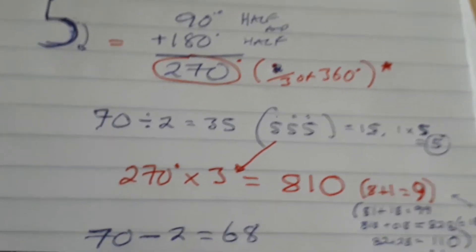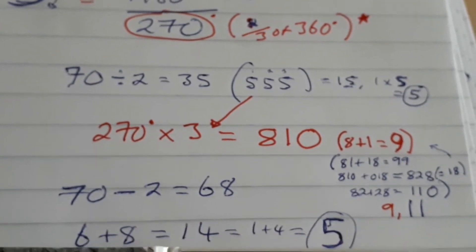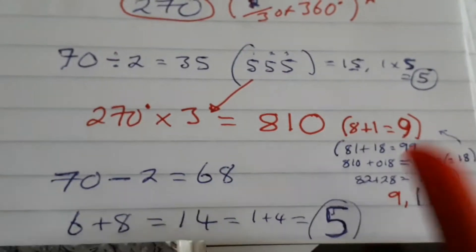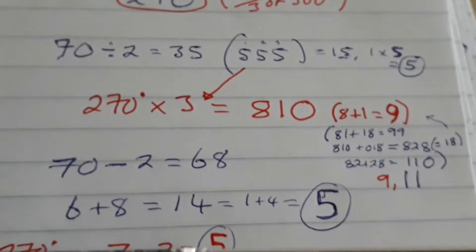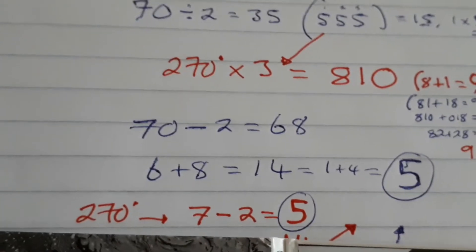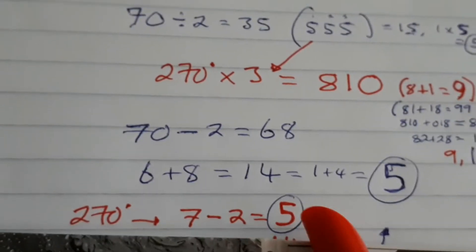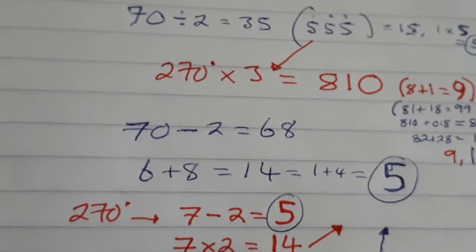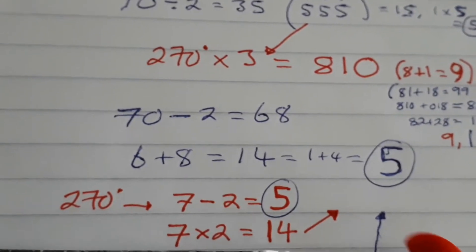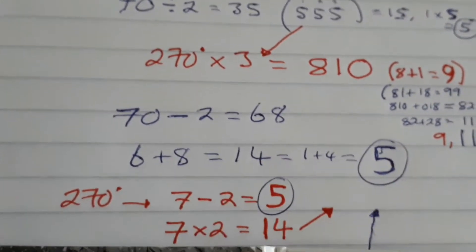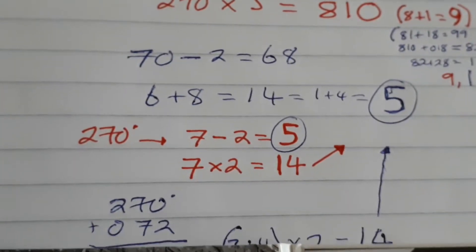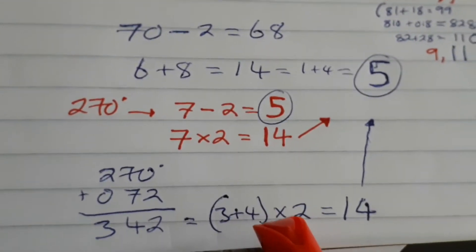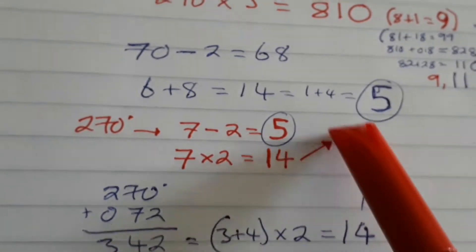Simple one there: 70 minus 2, 68, 6 plus 8 being 14, 1 and the 4 being the 5. 270 degrees, so that's 7 minus the 2, 5. I mean that might be cheating a bit, but it's there. 7 times 2, 14, simple. Back to that one, 1 plus 4. 270 plus the mirror 072, 342. 3 plus the 4 for the 7 times the 2, 14 again.